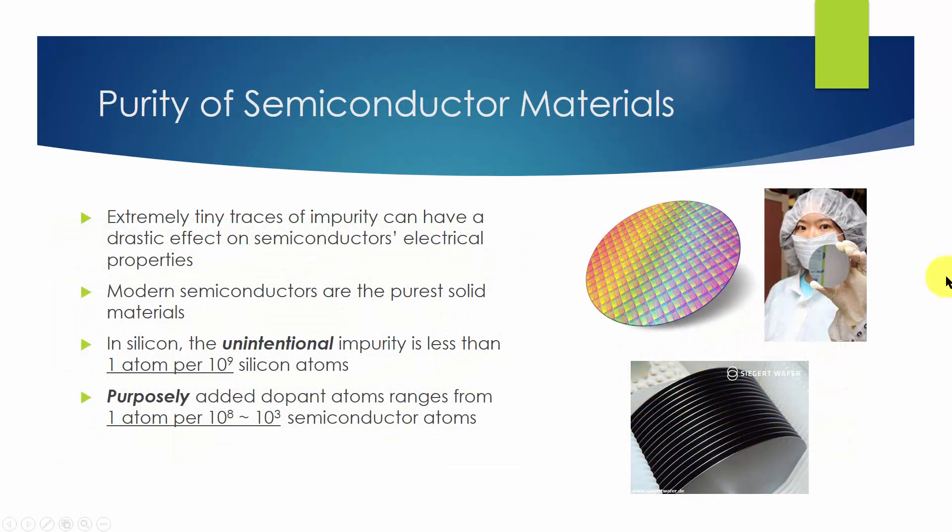Extremely tiny traces of impurity atoms called dopants can have a drastic effect on the electrical properties of semiconductors. For this reason, the compositional purity of semiconductors must be very carefully controlled. In fact, modern semiconductors are some of the purest solid materials in existence.